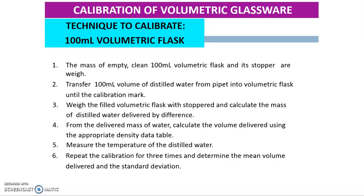The first step is you need to calculate the mass of an empty, clean 100 ml volumetric flask and its stopper. Then, you need to transfer 100 ml of water from a pipette into the volumetric flask until the calibration mark. And then, you must weigh the filled volumetric flask with stopper and calculate the mass of distilled water delivered by difference.